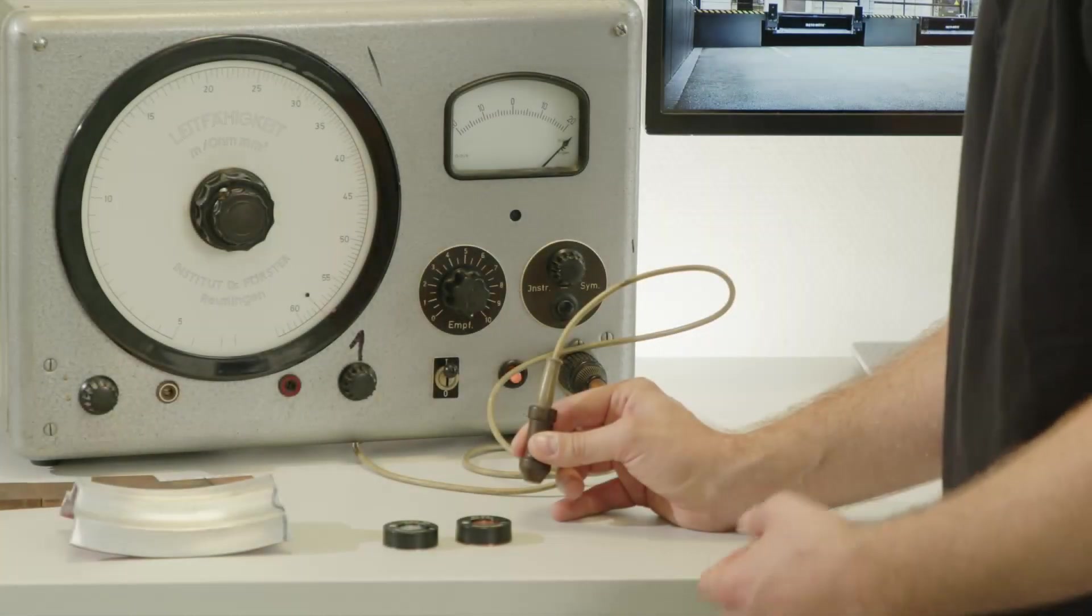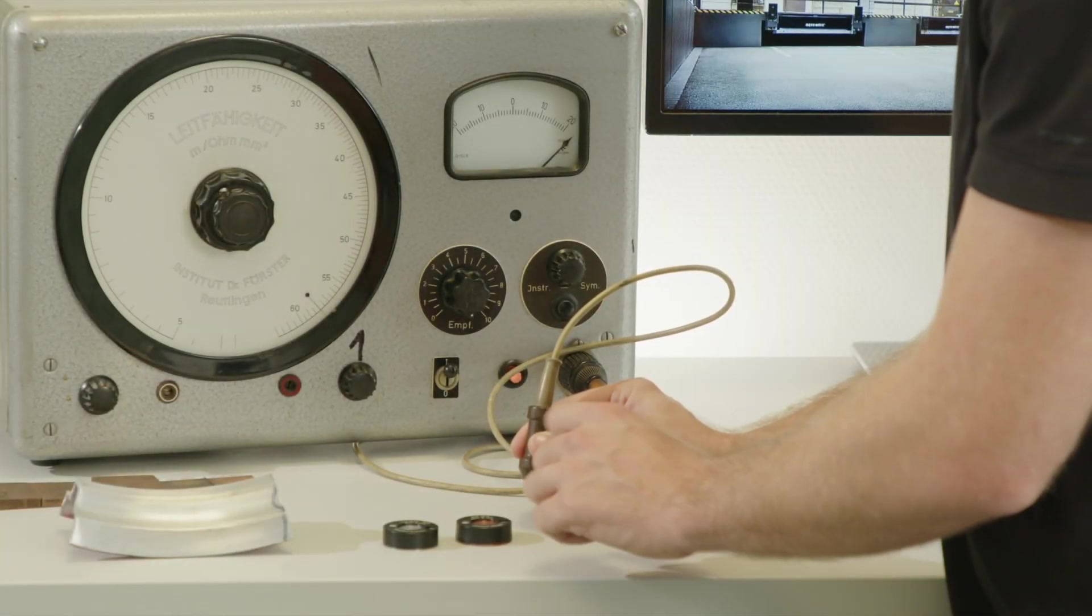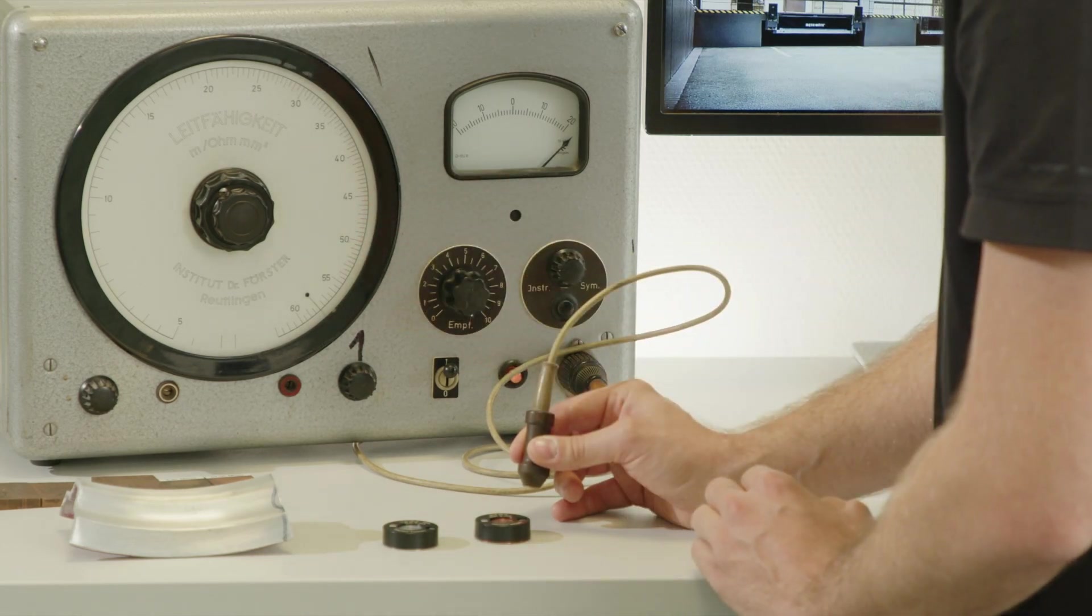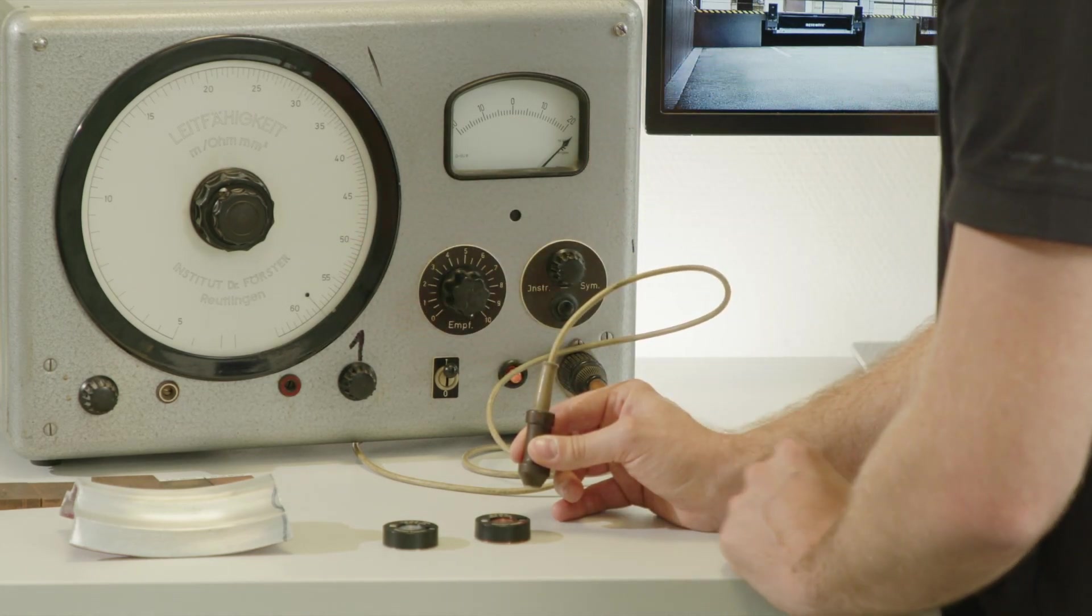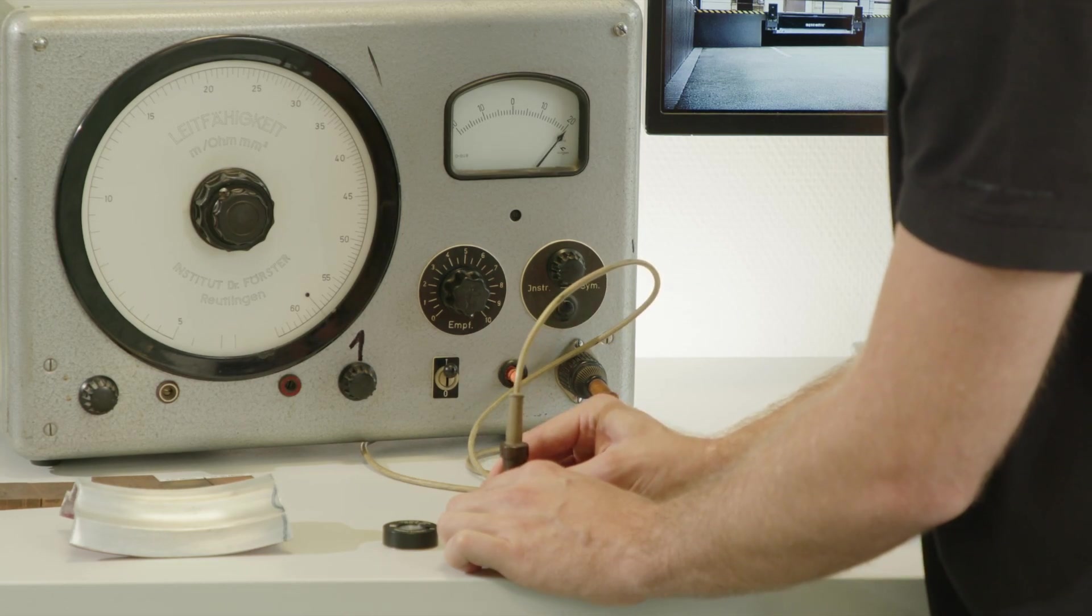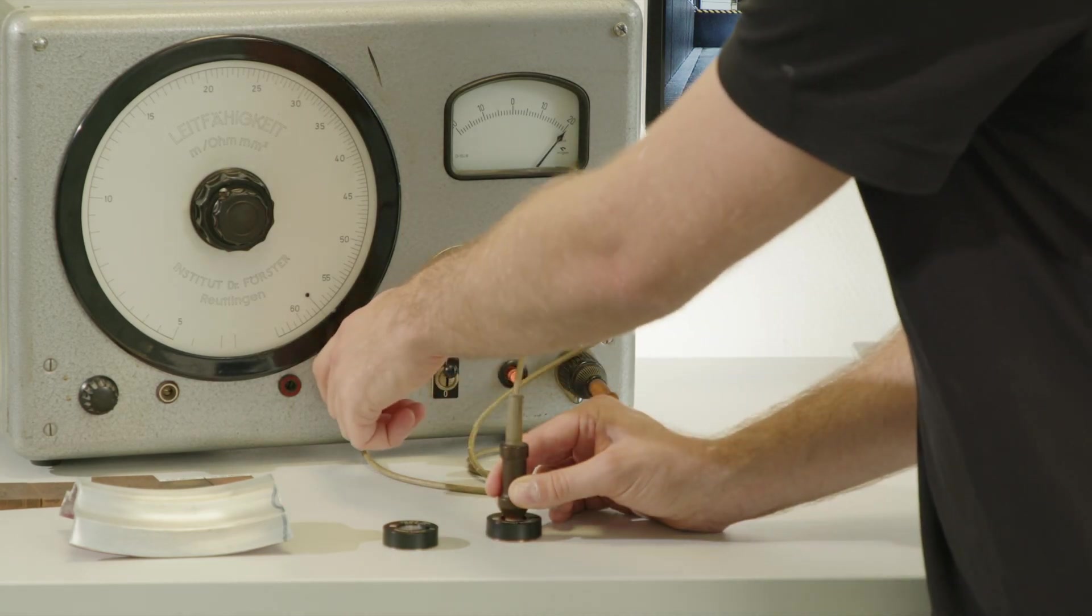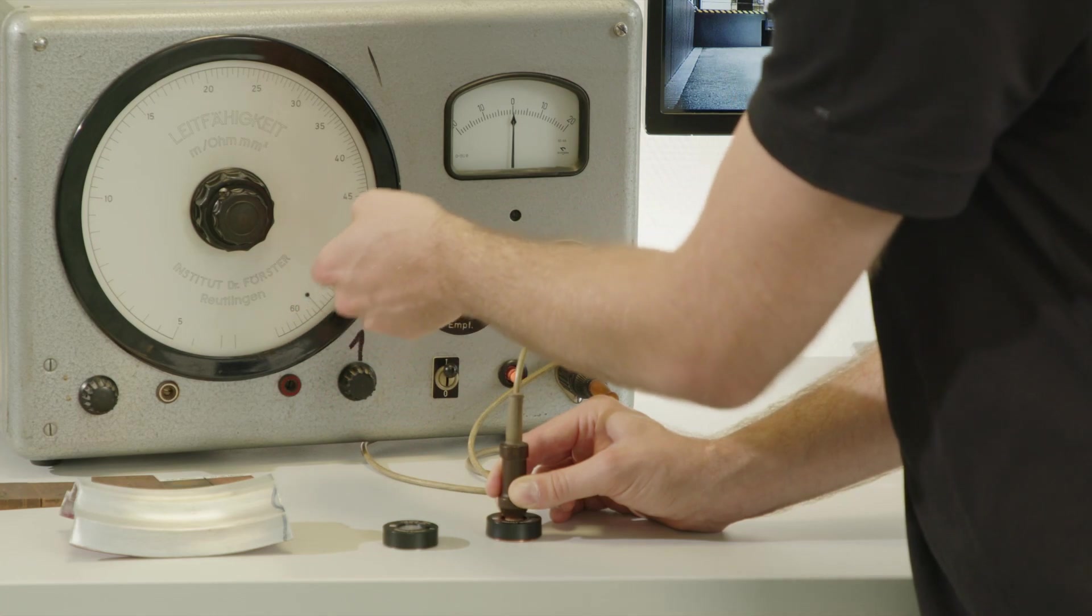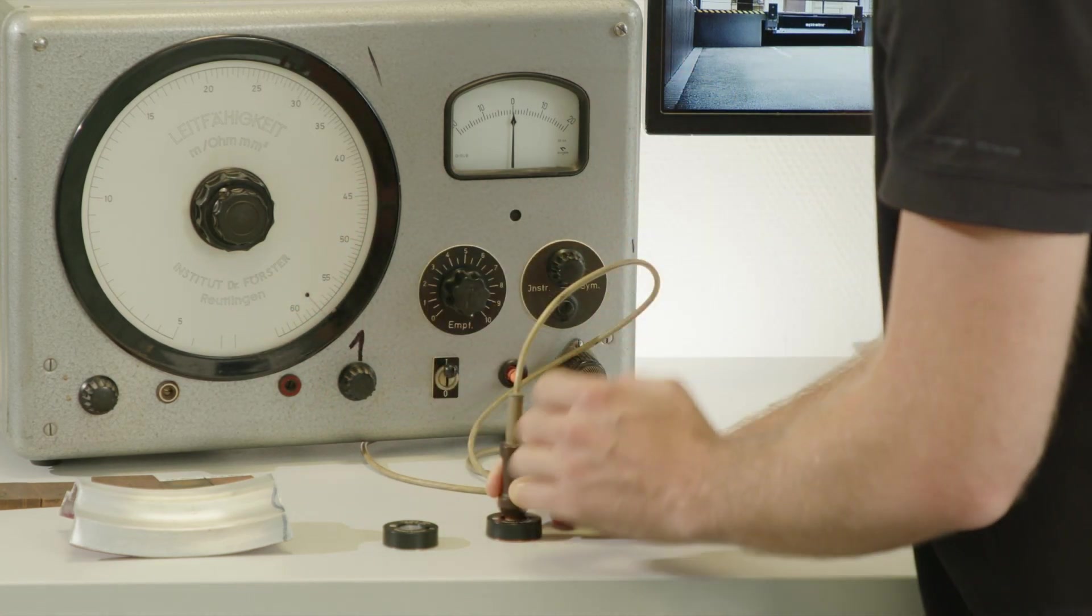So let's take a look. So again, we have our standards, we have 58.2 Megasiemens and we set this on the scale and we have a phase value. And if I put the probe on the standard, we get a signal, not so much, so we have to adjust the device to zero. So now the device knows at this conductivity value we have this phase.